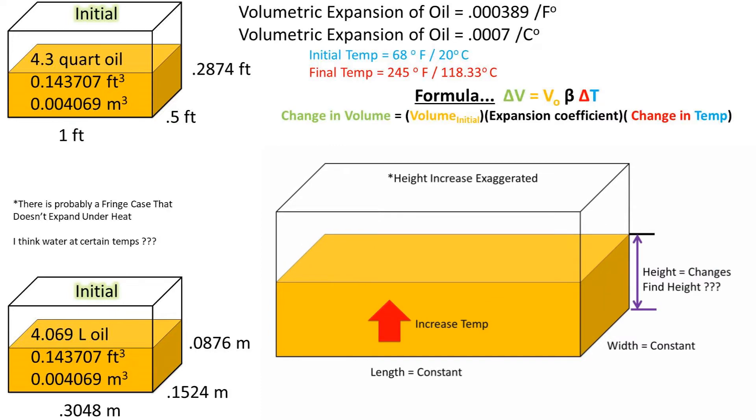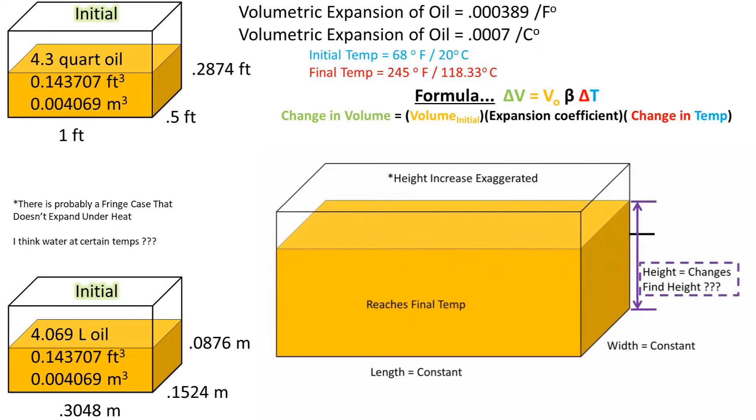The formula we'll be using is the delta, or change in volume, equals the volume initial times the expansion coefficient times the delta, or change in temperature. What this formula is stating is that if there's an increase in temperature, then there'll be an increase in volume. If the temperature decreases, then the volume will also decrease.